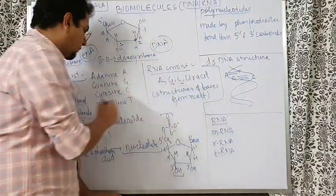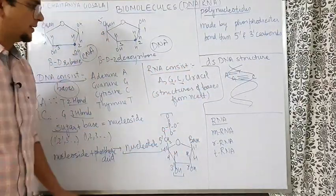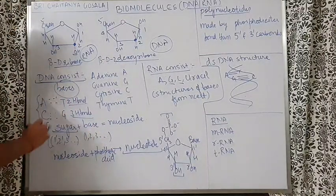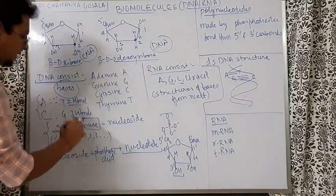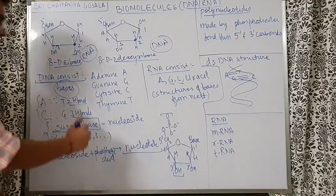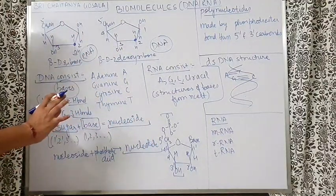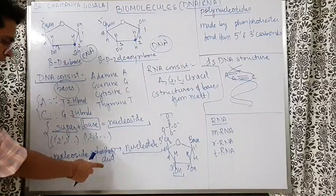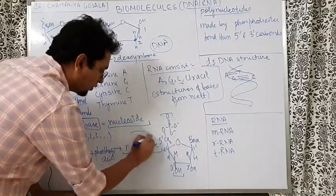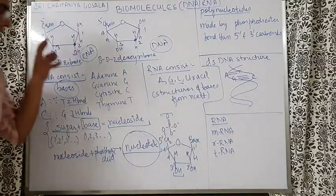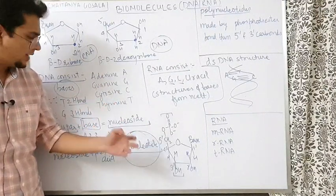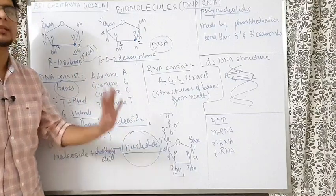In RNA, A, G, and C are common with DNA, but instead of thymine, RNA has uracil. Structures of bases should be read from the NCERT. If you take a pentose sugar together with any one nitrogenous base, the compound you get is called a nucleoside. Nucleoside plus phosphoric acid together forms a nucleotide. The difference: nucleoside does not have a phosphate group; nucleotide has a phosphate group — that is the only difference.